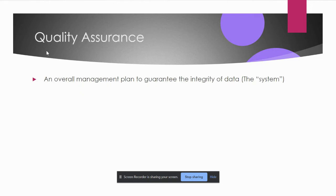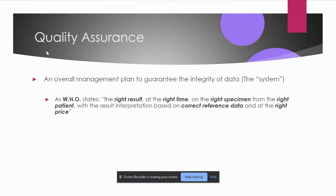Overall management plan which guarantees the integrity of the data is our quality assurance. In terms of WHO, it means the right result at the right time on the right specimen from the right patient, using the correct reference data at the right price. These combined elements make a good quality assurance system ensuring patients and physicians get accurate results.